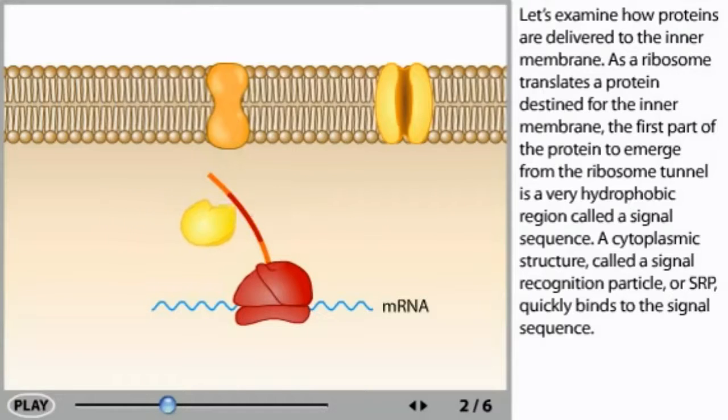A cytoplasmic structure called a signal recognition particle, or SRP, quickly binds to the signal sequence.